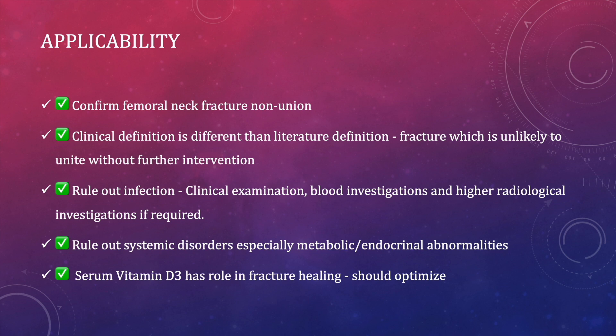Starting with applicability: first you need to confirm whether femur neck has established non-union, because sometimes it can progress towards delayed union — showing some compression but no loss of coronal alignment, not going into varus, valgus, or retroversion. We have to wait to see how things progress. Once non-union is confirmed — loss of reduction, no evidence of progression of union — then only we go for valgus intertrochanteric osteotomy.